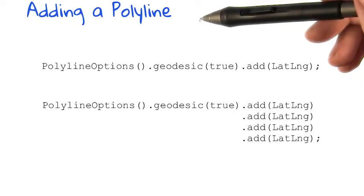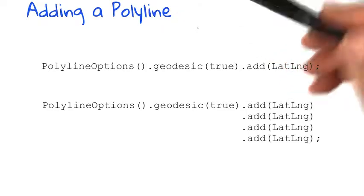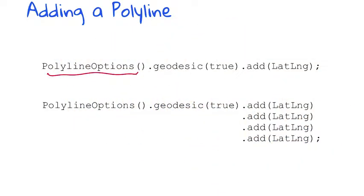So let's take a look at how to add a polyline to your map. Now, a polyline is defined with the PolylineOptions().geodesic(true), and then you simply add a LatLng to that.